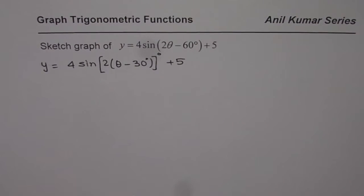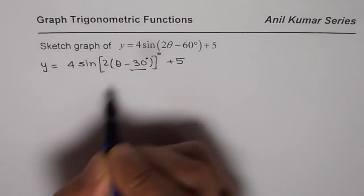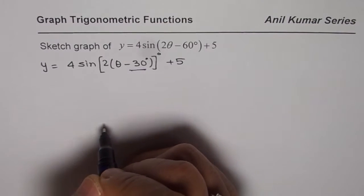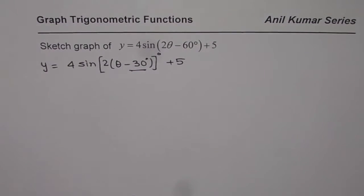To sketch this kind of graph we need a two-step process. I will sketch the graph without horizontal translation in the first step and then incorporate the horizontal translation. That is my two-step process. Then it really becomes very simple.